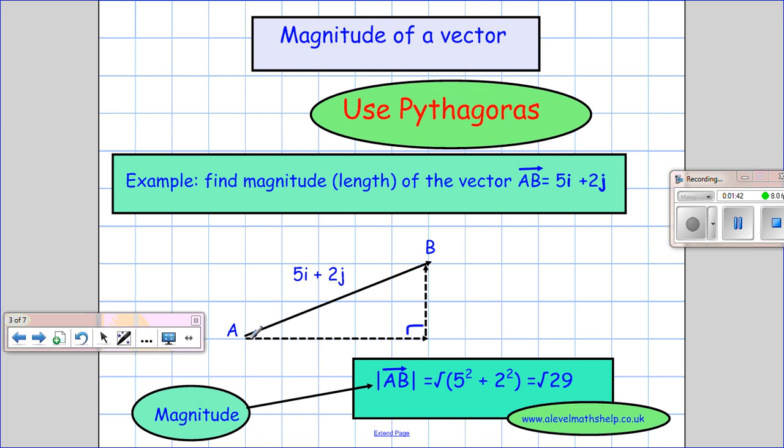And that's the magnitude, the length of the line AB, just by taking 5 squared plus 2 squared and square rooting it.